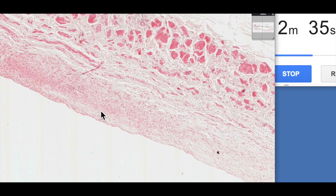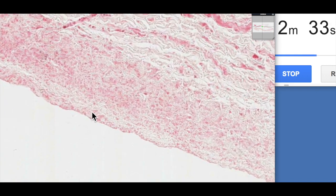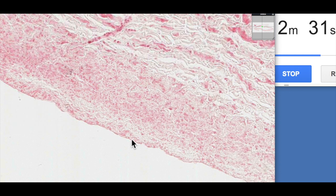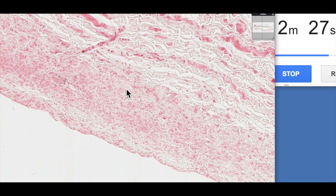If we zoom in, here's the tunica intima. It's not really that much to see to be honest. There's a simple squamous lining, endothelial lining and then here's the tunica media.